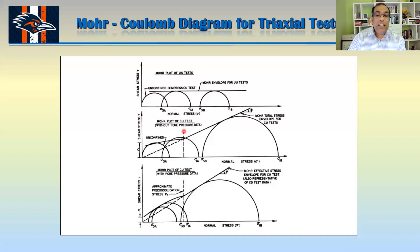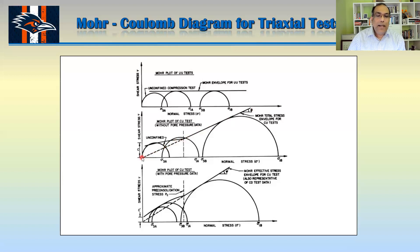You can also see the approximate pre-consolidation pressure here. After that pre-consolidation pressure, any pressure you apply makes the soil normally consolidated because your pressure is now higher than the pre-consolidation pressure. So the failure envelope goes through the origin for normally consolidated soil. For over-consolidated soil, you can see it goes like something different. When we draw the Mohr-Coulomb diagram for a triaxial test, we know sigma 3 and the deviator stress, and adding deviator stress to sigma 3 gives us sigma 1.